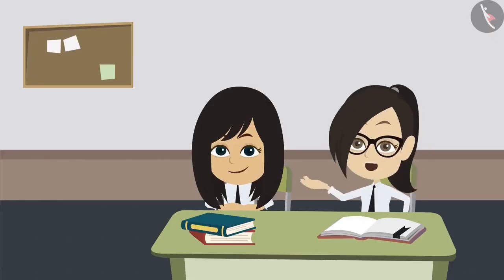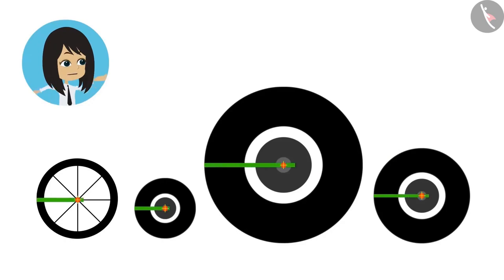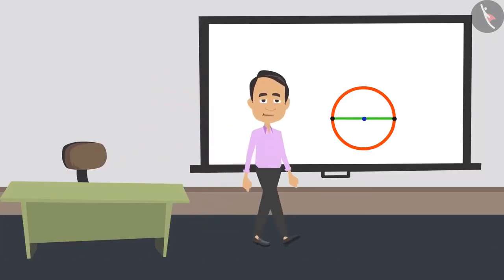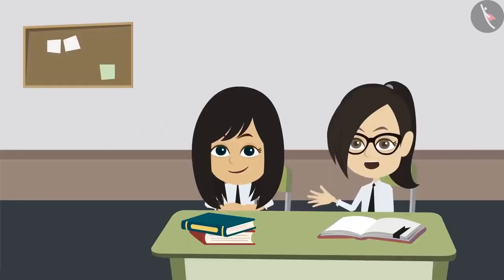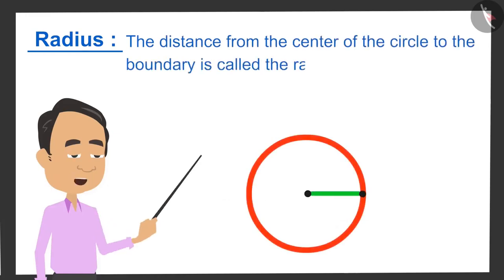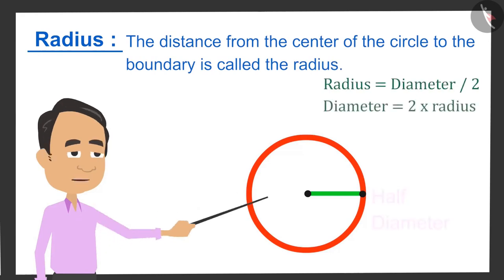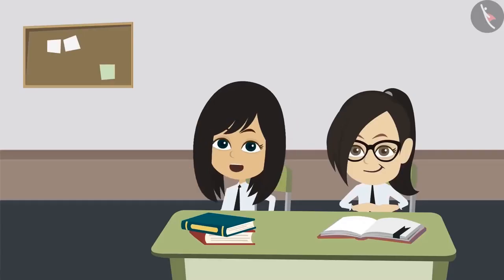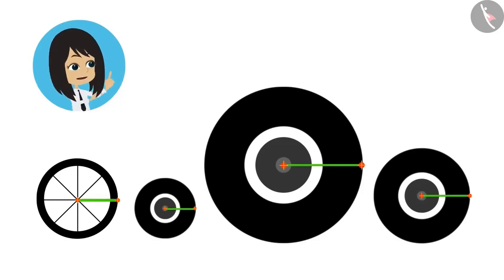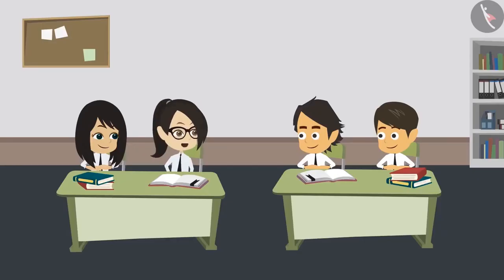To measure a circle, we measure its diameter. If we measure the diameter of all the wheels, we can tell the difference between them. Before that, the teacher introduces another property — the radius. The distance from the center of the circle to the boundary is called the radius, and it is half of the diameter. By measuring the radius of each wheel, we can also compare their sizes.